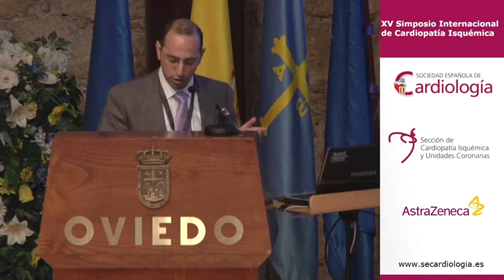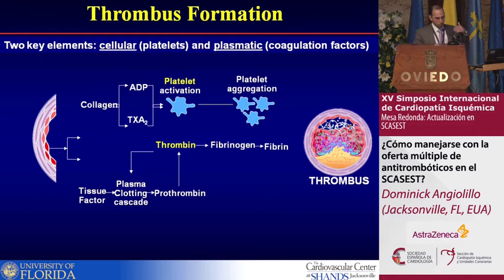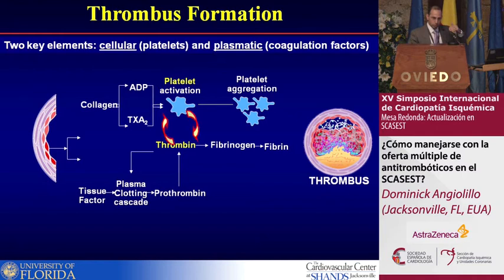We'll start off with a slide of pathophysiology. I think it's always important to understand the development of a clot. As we know, when we have plaque rupture, the two key elements are a cellular component and a plasmatic component, which lead to the generation of a thrombus. It's also important to keep in mind that there's an interplay between the two — platelet activation generates thrombin, and thrombin is the most important activator of platelets. So it's very important when we speak about antithrombotic management that we distinguish antiplatelets from anticoagulants.